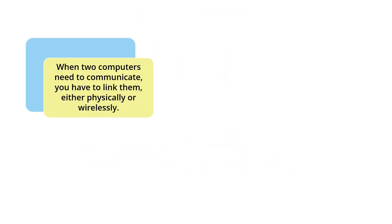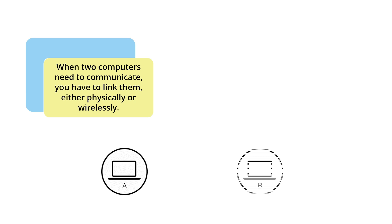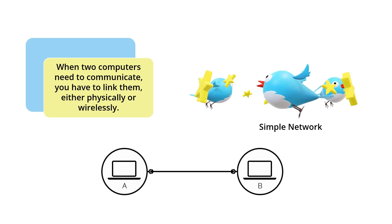You can see what forms the internet from scratch. When two computers need to communicate, you will have to link them either physically or wirelessly. These two computers A and B are connected. In this video, we are showing the physical or wired connection, but the same will be applied to the wireless connection also. When A and B are connected, they form a simple network.